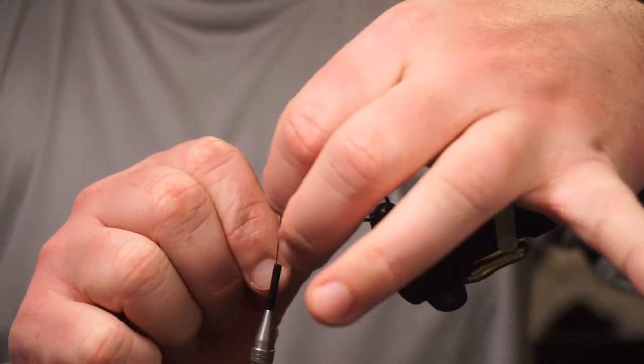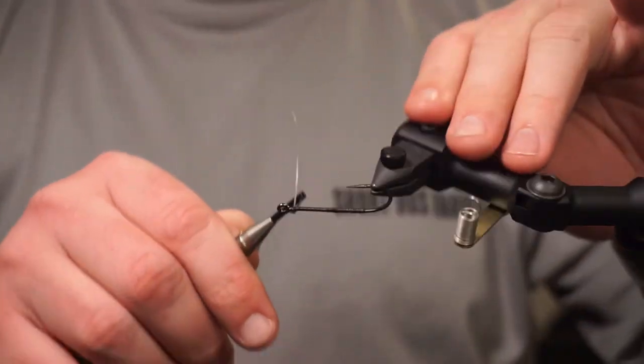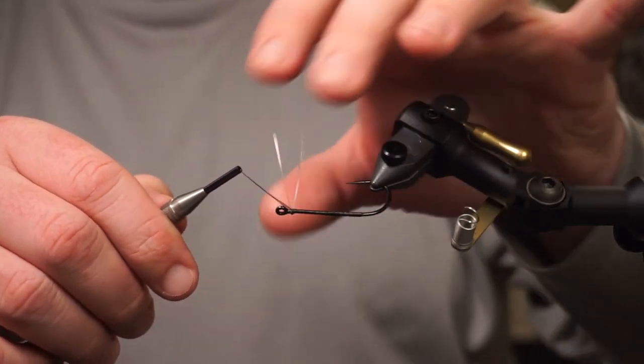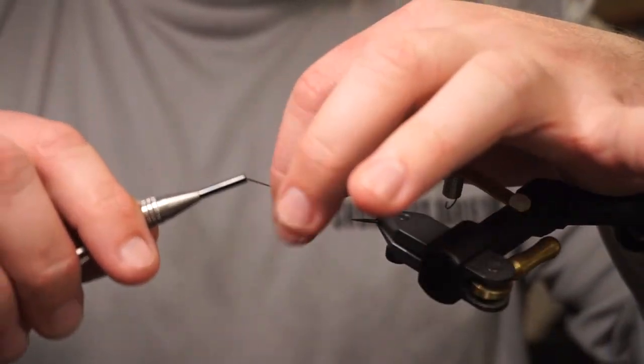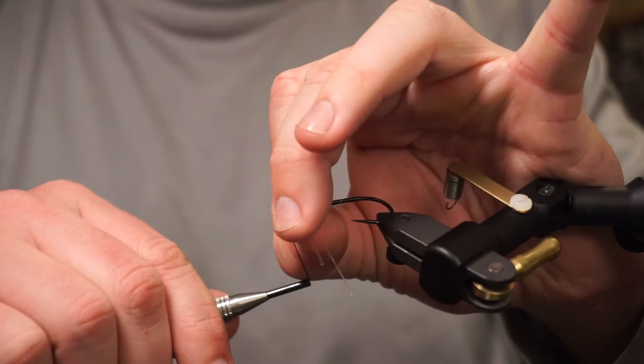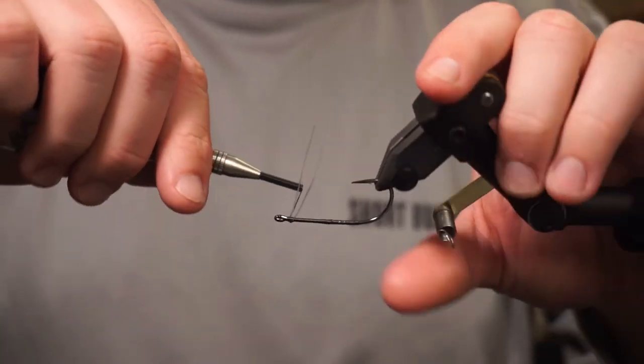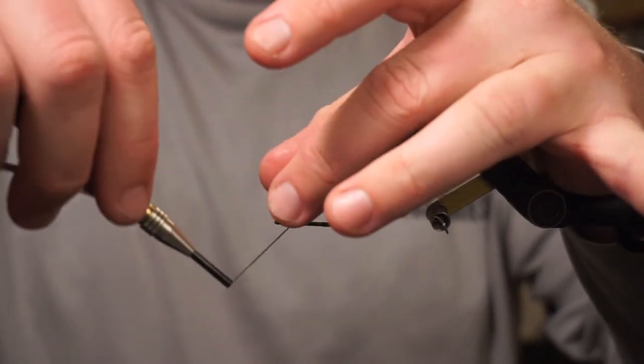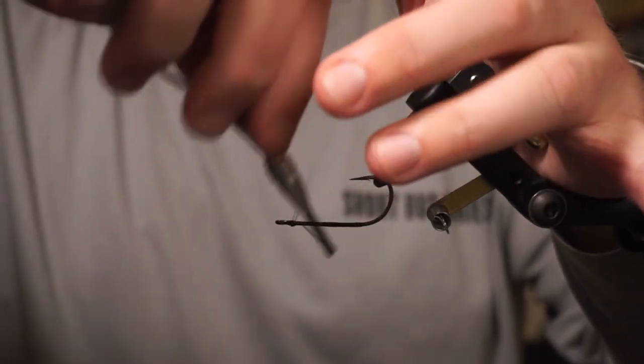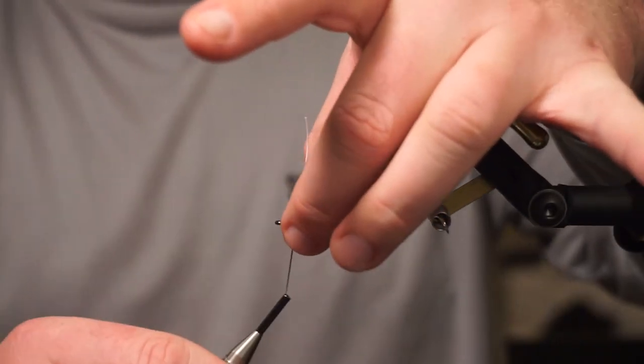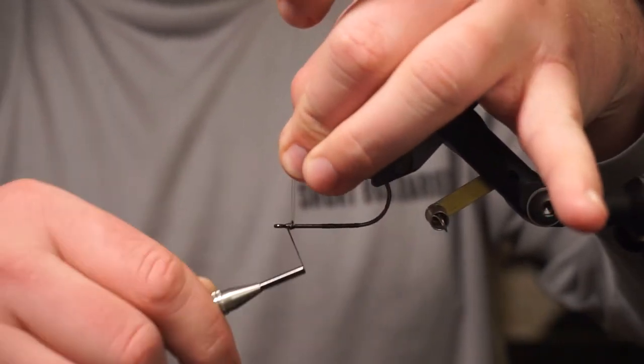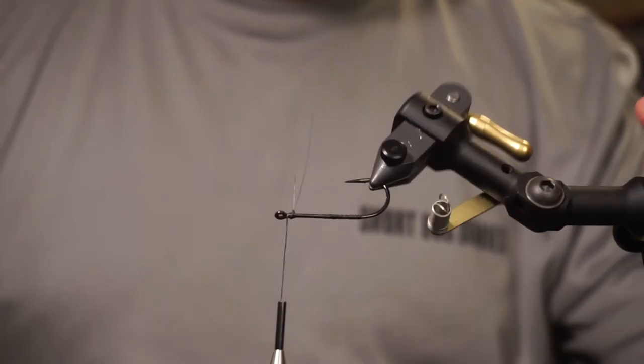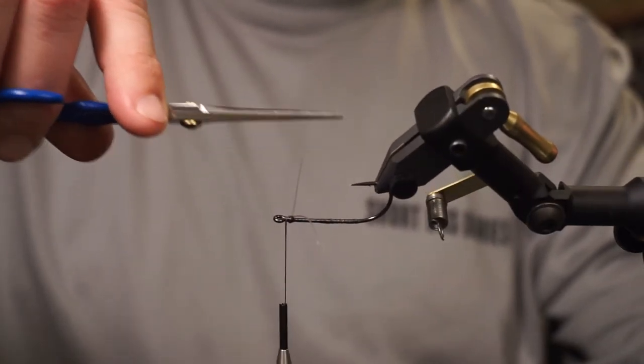Then we're going to start pulling downwards. As you do that, some of those X thread wraps are going to start sliding down that mono. I like to make a few more of those, and then the last couple I'm going to make a couple wraps.